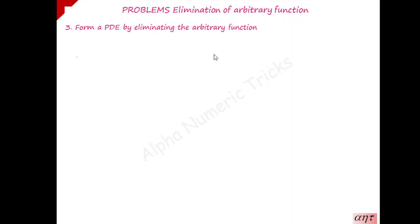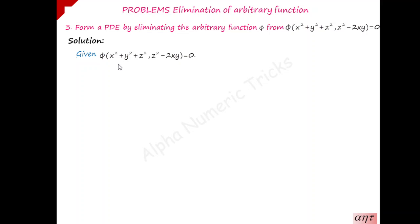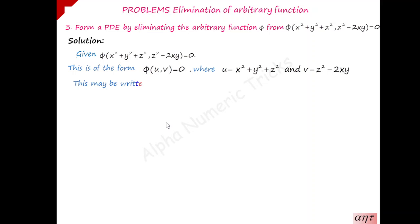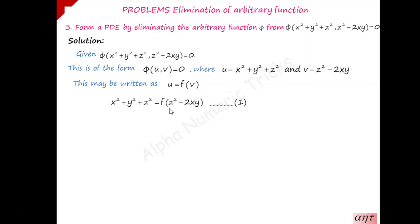You have to form a partial differential equation by eliminating arbitrary function phi from the function phi of x squared plus y squared plus z squared, z squared minus 2xy, is equal to 0. This is of the form phi of u comma v is equal to 0. You have to rewrite this as u is equal to f of v, where u is x squared plus y squared plus z squared and v is z squared minus 2xy. So, u equals x squared plus y squared plus z squared is equal to f of v, which is z squared minus 2xy. Number this equation as 1.